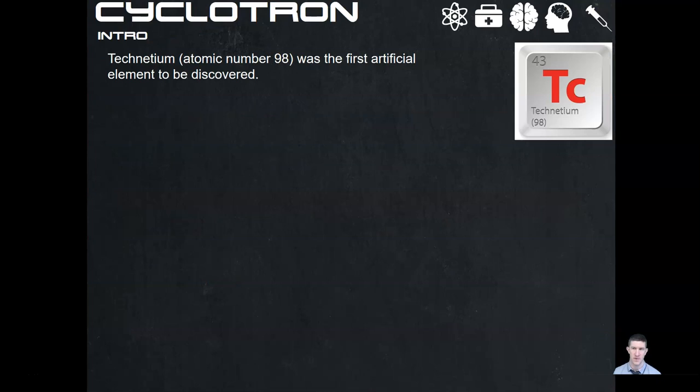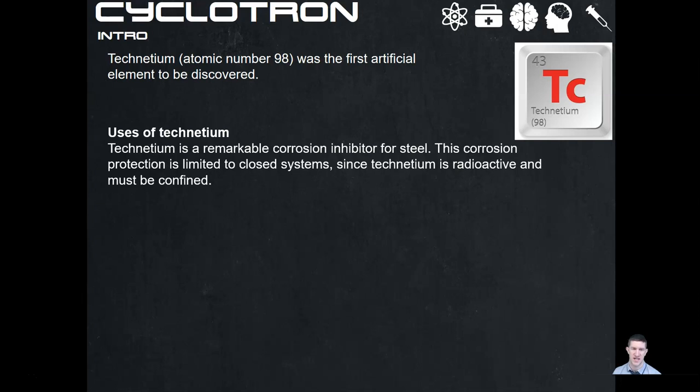A bit of background information. Technetium, which is atomic number 98, was the first artificial element to be discovered. We use it for a range of things. It's a remarkable corrosion inhibitor for steel, though this corrosion protection is limited to closed systems since technetium is radioactive and must be confined. So for anything not exposed to the outside environment, such as a closed system, we can use technetium as a really good corrosion inhibitor. Something like chrome is also good but significantly heavier and potentially more expensive.